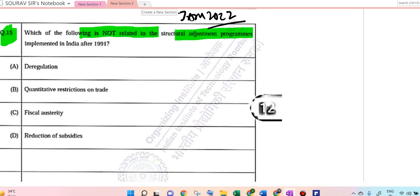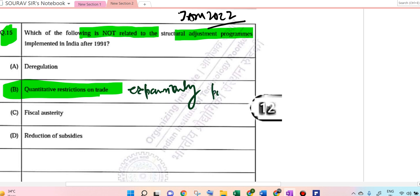The structural adjustment program was mostly part of the industrial revolution. The only thing which was not a part is the quantity restrictions on trade, and there were expansionary policies that were implemented.